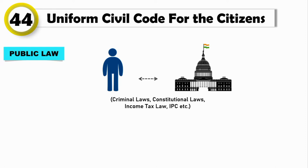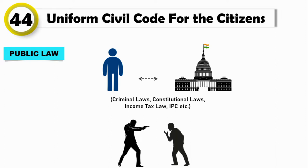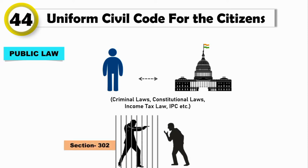For example, if a person murders someone, then Section 302 will be imposed on that person — whether that person belongs to any religion, caste, or class, or any gender, the punishment will be the same.